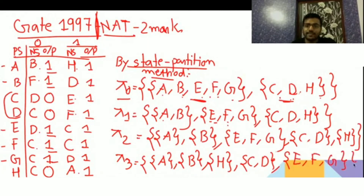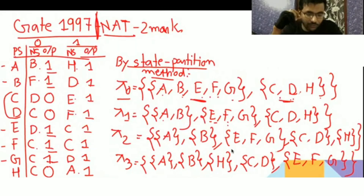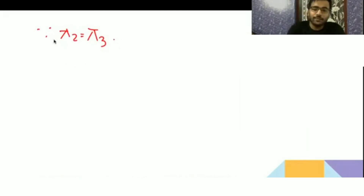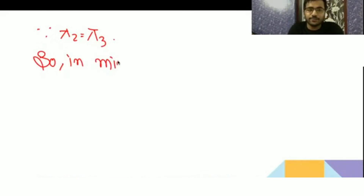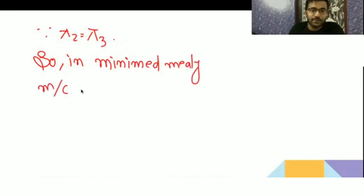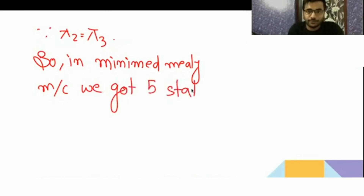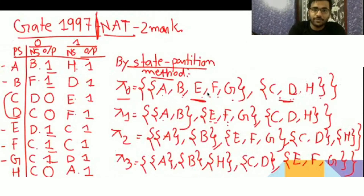Since pi-3 equals pi-2, the partition has stabilized. We can now merge: C and D form one state, and E, F, G form one state. So in the minimized Mealy machine we got 5 states total — the answer to the GATE 1997 question is 5 states.